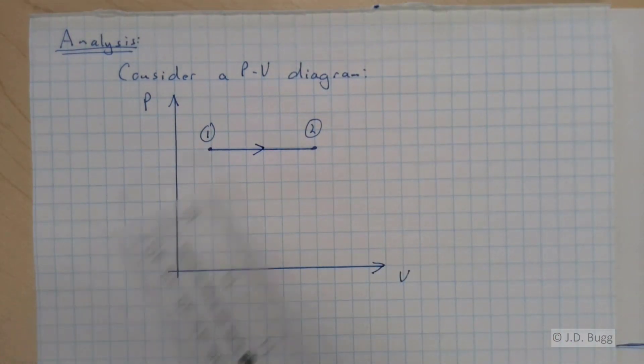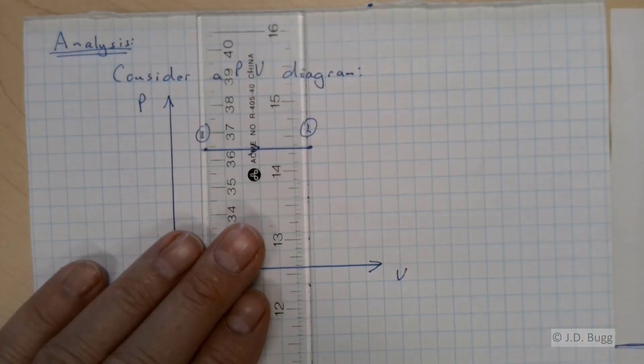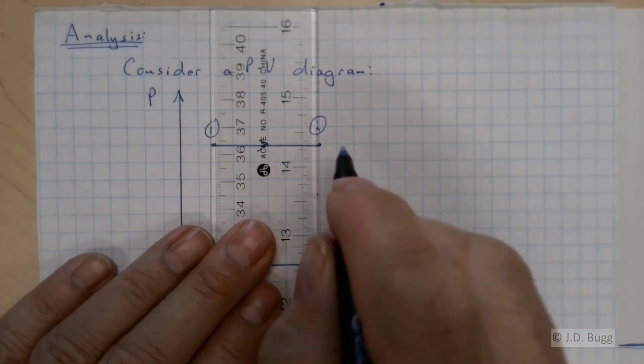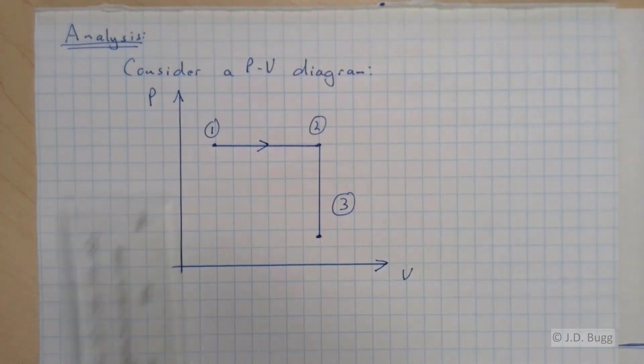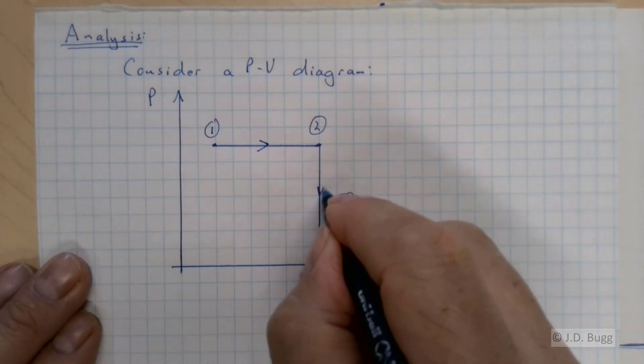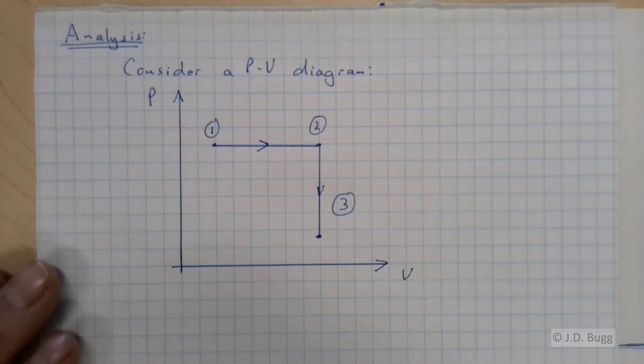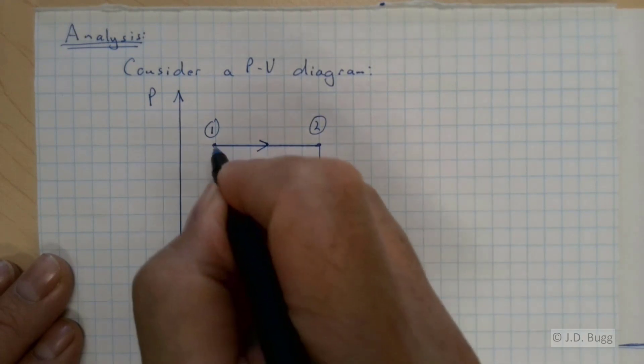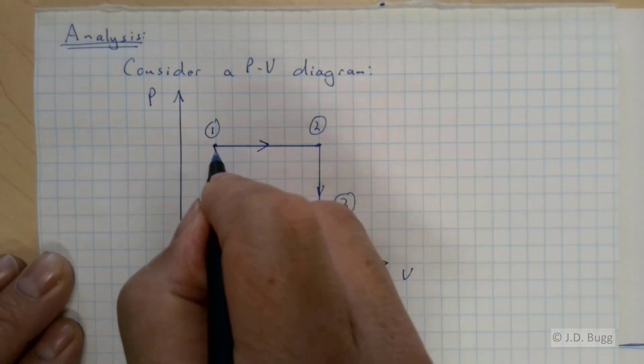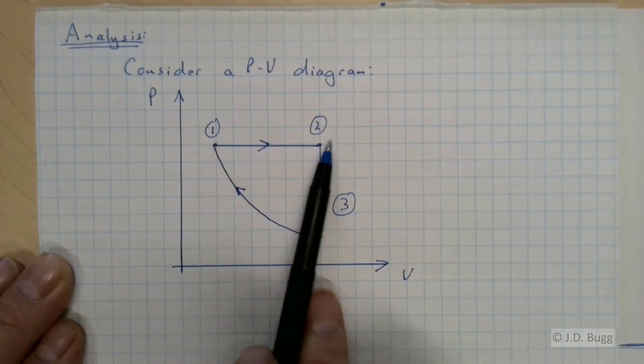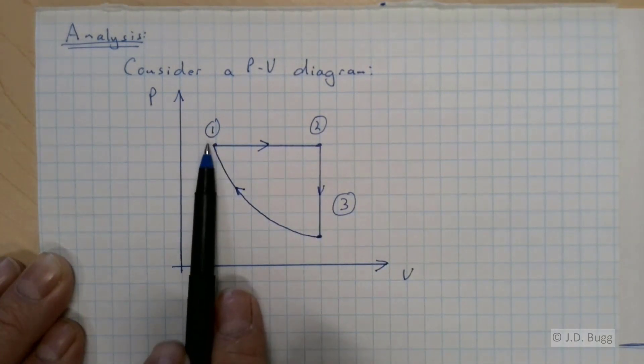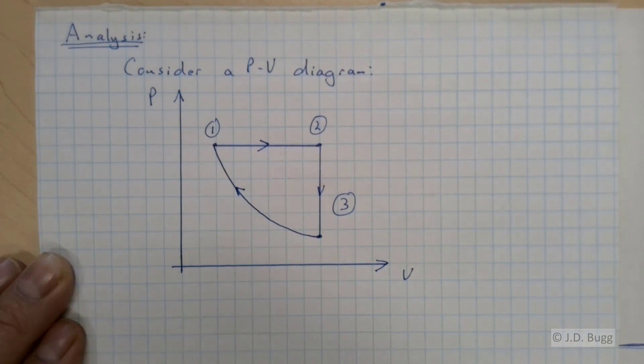Second process is constant volume. And the pressure reduces. So we go straight down to point 3. And so finally, our last process from 3 to 1 is polytropic. So remember, that's a curved line. So constant pressure, constant volume, polytropic. And we need to find the work for all three of those.